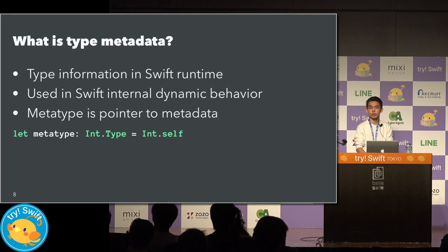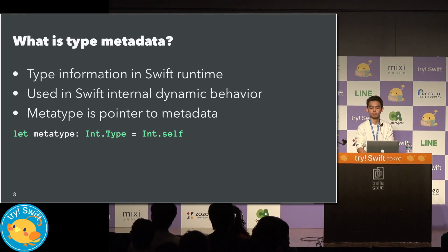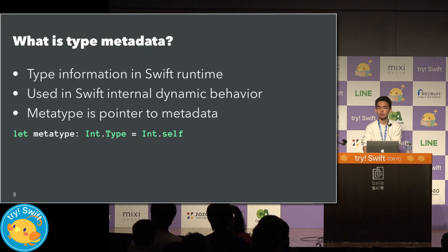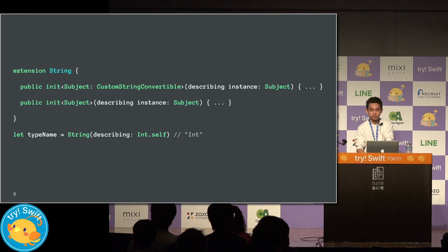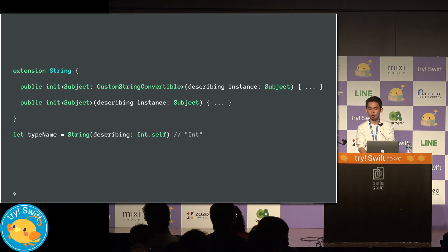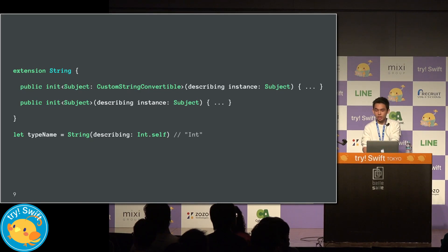Type metadata is Swift's internal information about types, like instance size and number of cases of enums, and so on. This information is stored statically in the binary or generated dynamically at runtime. Metatype is represented as the type name plus the self keyword, and the actual value is a pointer to the metadata. Int.self is a metatype object and it is passed to the string initializer. This initializer accepts any type of value and returns the description property if the type of the value conforms to CustomStringConvertible, and returns the type name if a metatype is passed in.